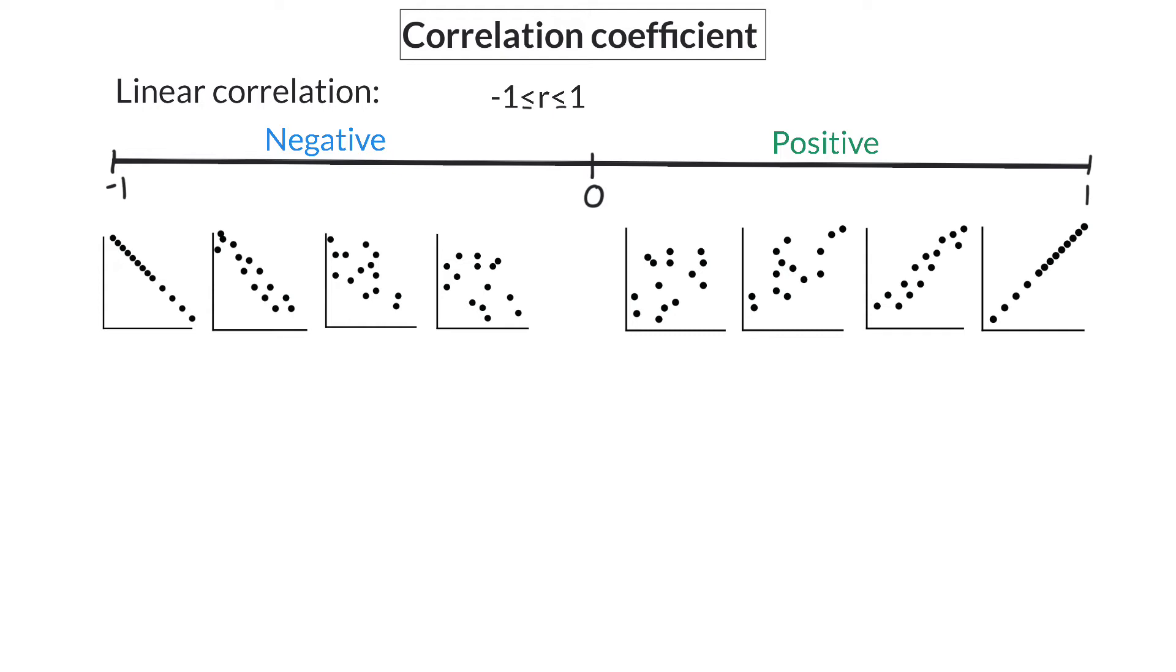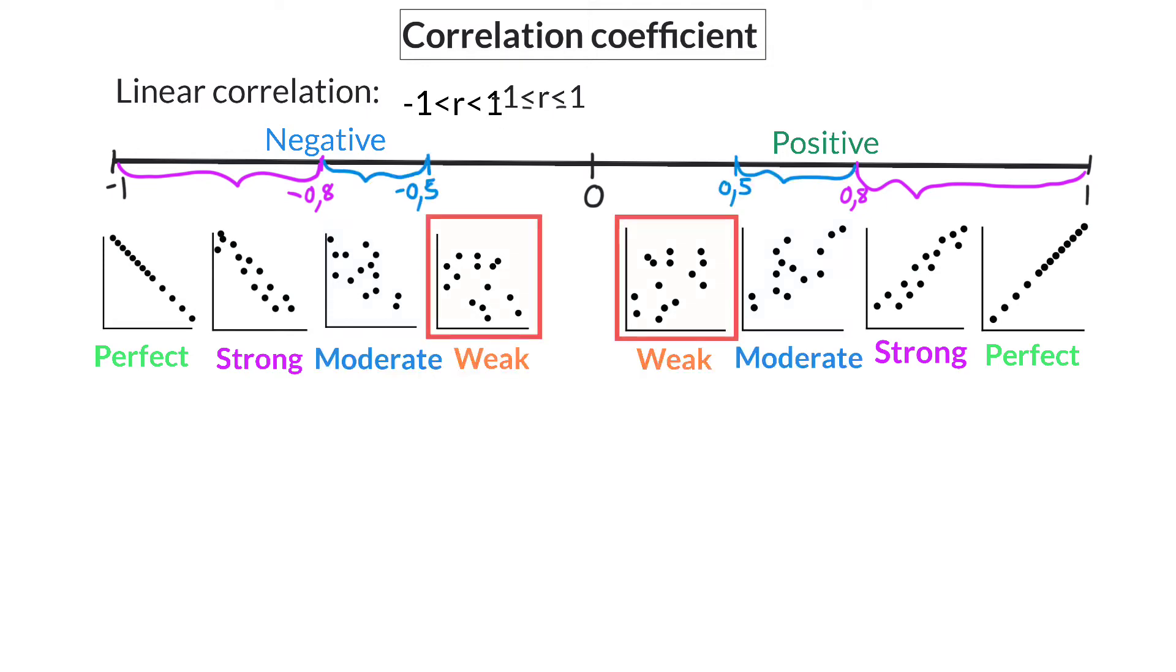When the coordinates lie precisely in a straight line, whether it's a positive gradient or a negative gradient, we call this a perfect correlation. Here, the correlation coefficient will be minus 1 or 1. Then we get a strong correlation, and as the coordinates lie further away from the regression line, it becomes a moderate correlation, and then a weak correlation, until there's no correlation at all.